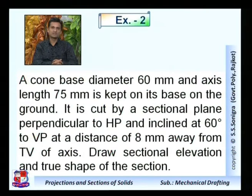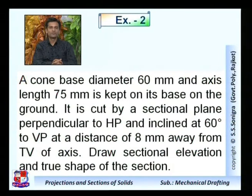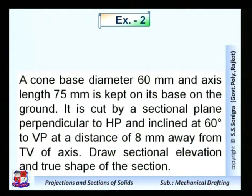The cutting plane is perpendicular to HP and inclined at 60 degrees to the vertical plane. Since the angle with VP is given, in the top view the cutting plane would appear as a straight line. So first draw the front view and top view; after that in the top view the cutting plane line will be visible as a straight line. The position of the cutting plane line is given: it is 8 mm away from the top view of the axis.